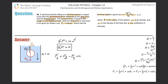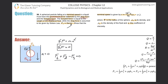We want to solve for terminal speed v, and v only appears in the drag force term. So I need to isolate the drag force by rearranging the equation. Moving the other terms over, we get: F_d = F_g − F_b.